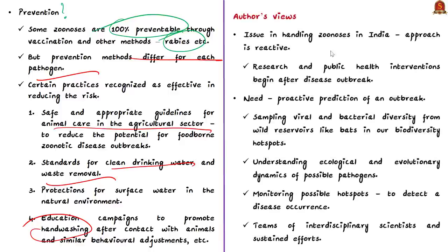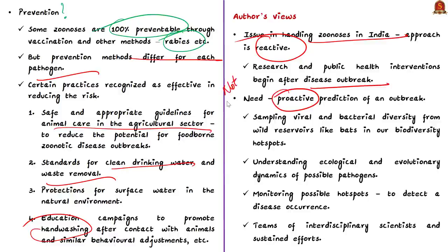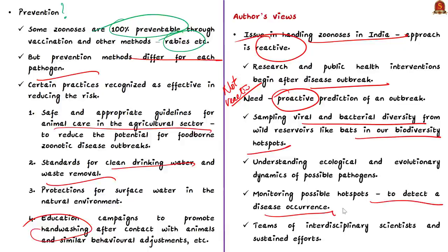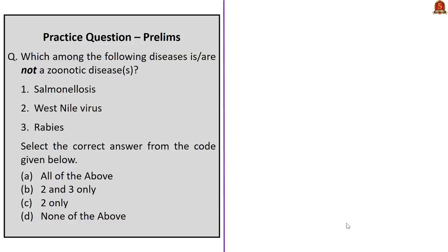The main issue in handling zoonotic diseases in India is that our approach is reactive — we act only after a disease breaks out, like with COVID-19. Research and public health interventions begin only when there is an outbreak. What is needed is proactive prediction of an outbreak. For this, viral and bacterial diversity from wild reservoirs like bats in biodiversity hotspots needs to be sampled, ecological and evolutionary dynamics of possible pathogens must be understood, and possible hotspots of virus need to be monitored. This requires more research in biotechnology and healthcare, and teams of interdisciplinary scientists with sustained efforts.